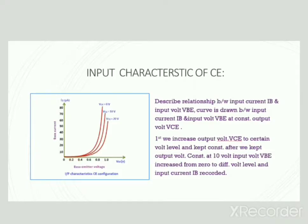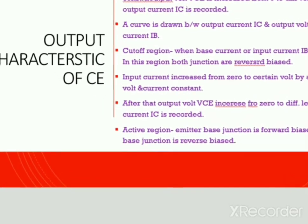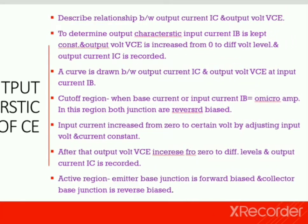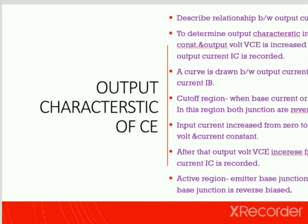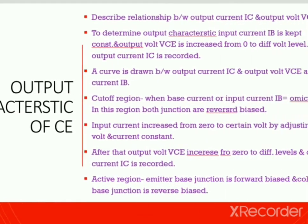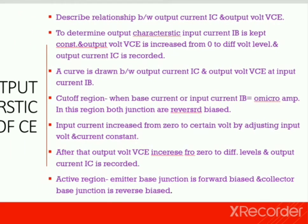Now coming to the output characteristics of the CE configuration. It describes the relationship between output current IC and output voltage VCE. To determine output characteristics, input current IB is kept constant at 0 microamperes, and output voltage VCE is increased from 0 to different voltage levels. A curve is drawn between output current IC and output voltage VCE at constant input current IB.